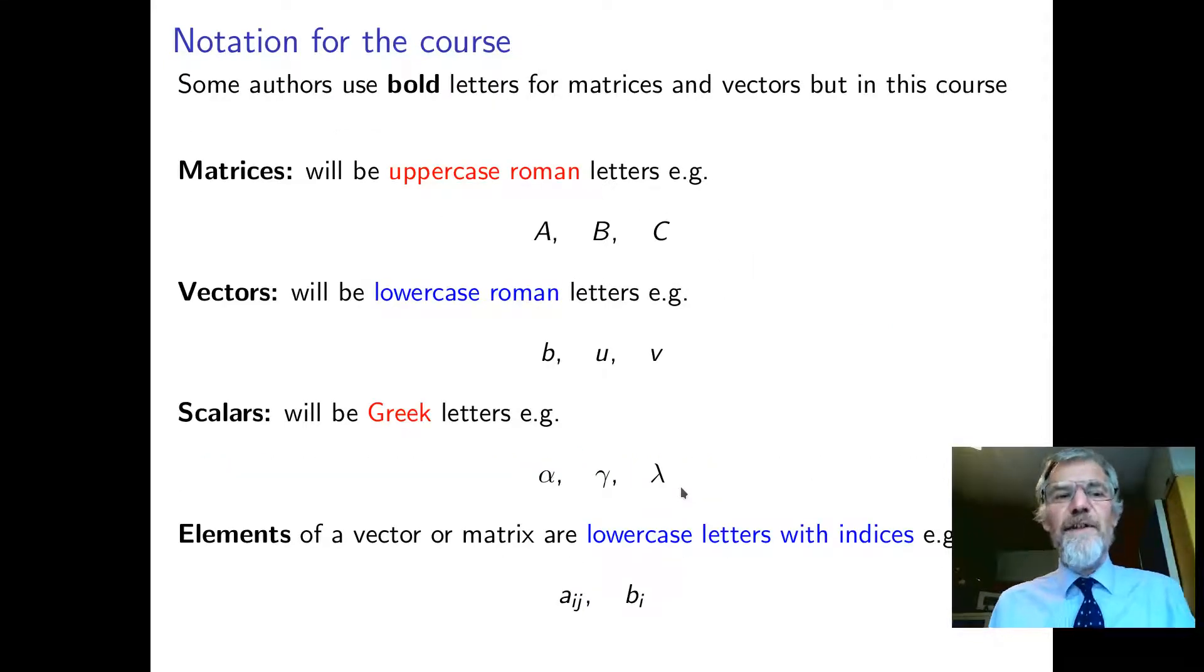The notation we're going to use is that matrices will be capital letters. Vectors will generally be lowercase Roman letters, and scalars, in other words just numbers, will be Greek letters. Some authors and some books use bold for vectors and matrices. The elements of a matrix will be denoted by the lowercase letters with subscripts. So a_ij, little a_ij, is the element of big A.